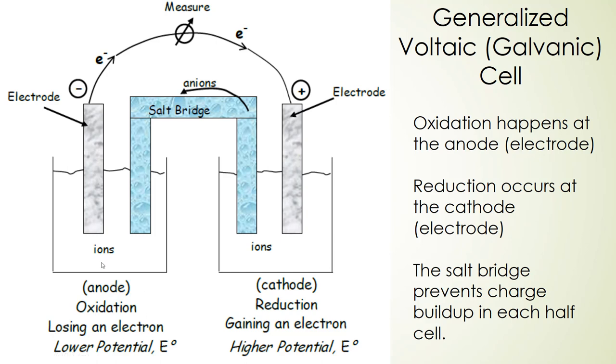The anode compartment is always going to have the element with the lower standard reduction potential. The cathode compartment, this is where reduction happens. We're going to be gaining electrons and this is always going to be the element with the higher reduction potential.